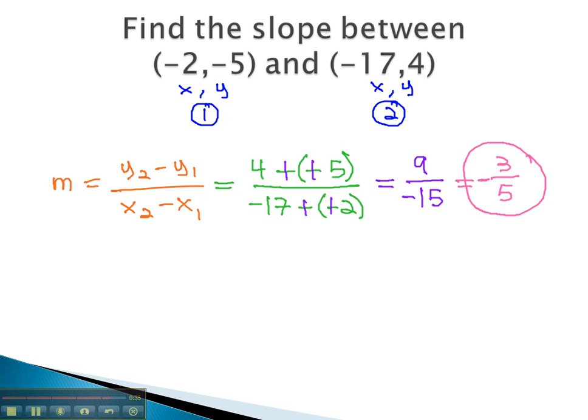The slope between these points is negative 3 fifths. This means for every 3 units the graph goes down, it will also run a horizontal distance of 5. Notice, because the slope is negative, we know this line is going downhill from left to right.